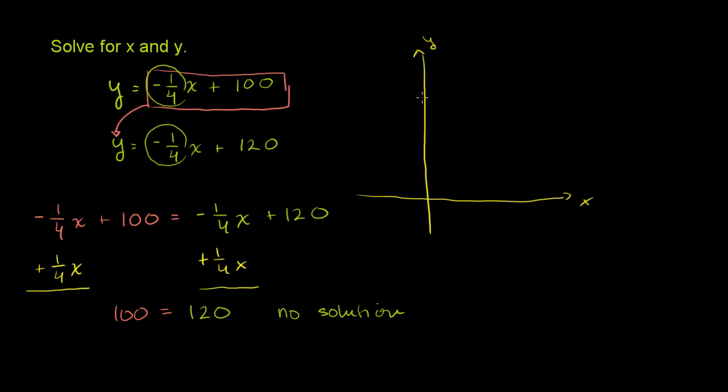This first graph over here, its y-intercept is 100, let me do it a little bit lower, let's say that that is 100, so it intersects right there, and has a slope of negative 1/4. So maybe it looks something like this. That's that first line.